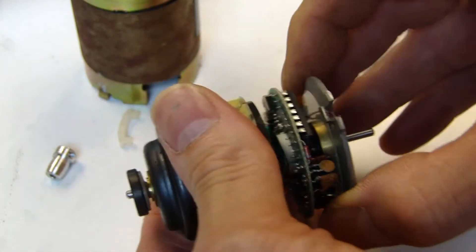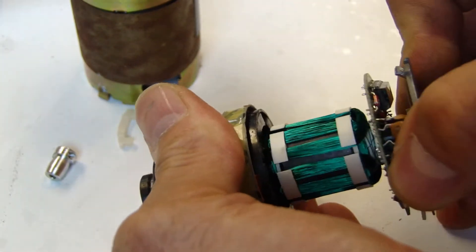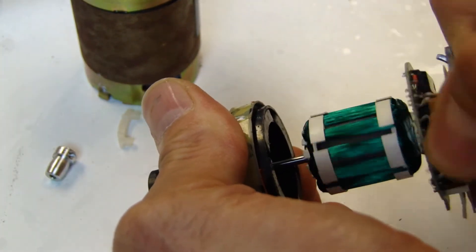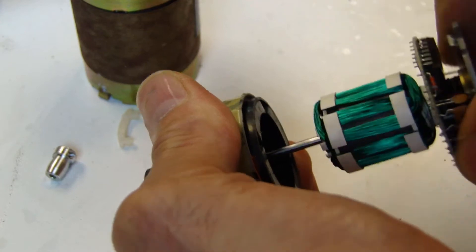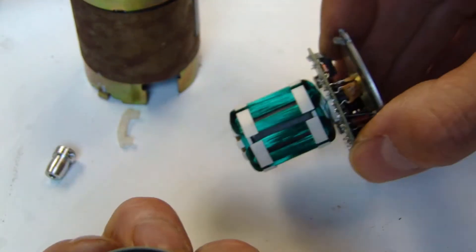You can now slowly remove the inner core out of the magnetic housing. Do this gently by using a twisting motion as you slowly pull. Make sure you're not holding on to the PCB itself as you pull it out, otherwise this may crack.